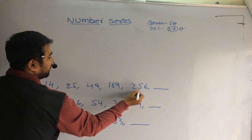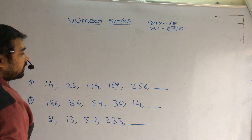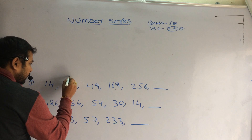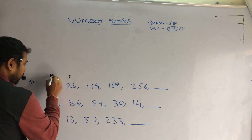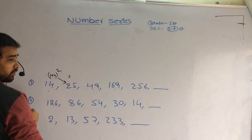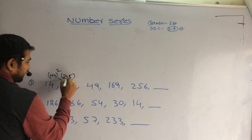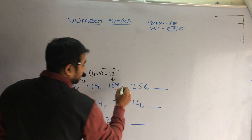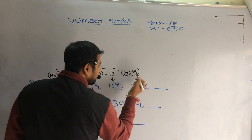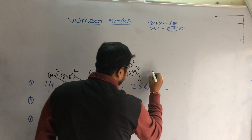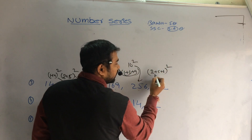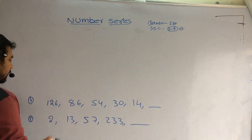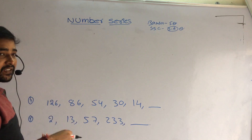Third one. So here, 256, 169, 49, 25. All these are perfect squares. But 14 is not a perfect square — so how are these numbers coming? This is 5 squared. 1 plus 4 is 5. 5 squared is 25. 2 plus 5 is 7. 7 squared is 49. 4 plus 9 is 13. 13 squared is 169. 1 plus 6 plus 9 is 16. 16 squared is 256. What next? 2 plus 5 plus 6 is 13. 13 squared is 169, which is my answer. These numbers are in descending order.